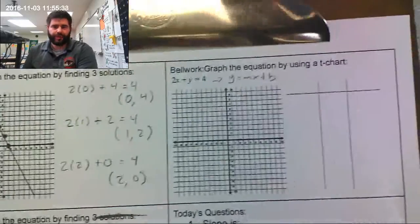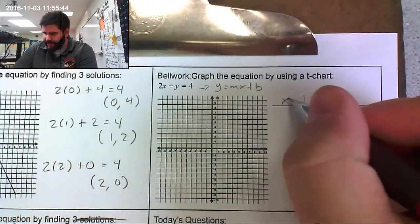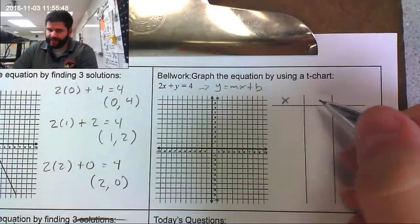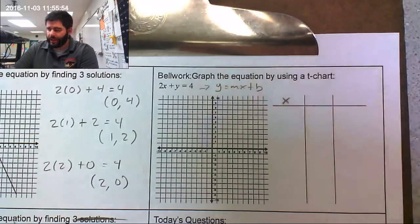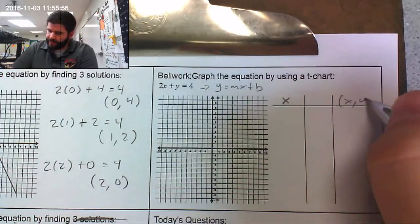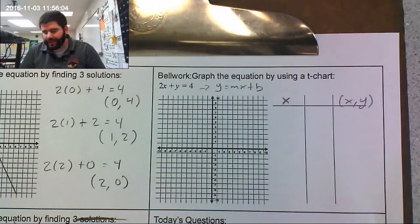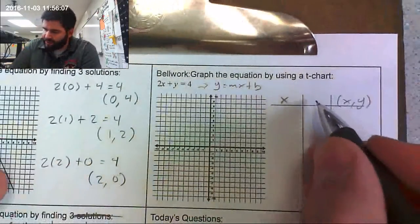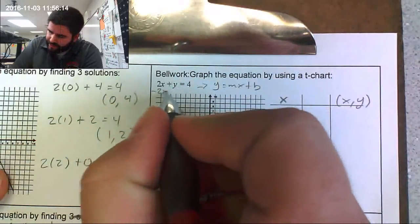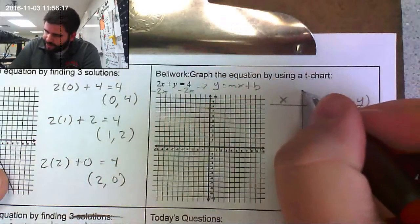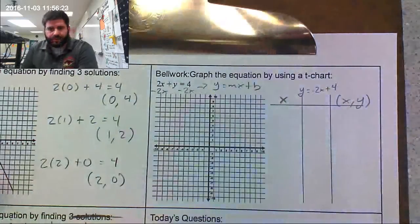The next method is using a t-chart. The left column is your x coordinate, the right column is for your y coordinate which you solve for, and then you put them together as an ordered pair to plot. Over here I'm going to do some algebra to convert the equation into slope-intercept form. I subtract 2x from both sides and get y equals negative 2x plus 4.